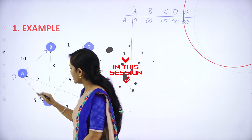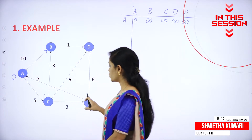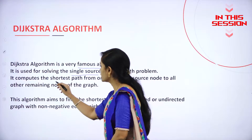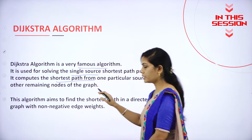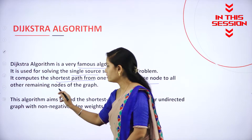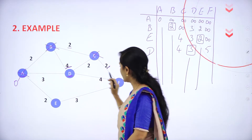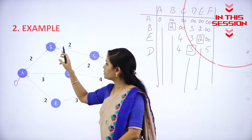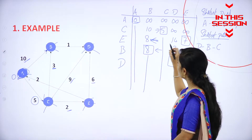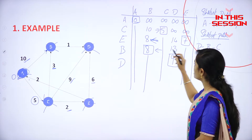B and A is connected to C, but A is not connected to E. E is connected to A. The shortest path from one particular source node to all other remaining nodes of the graph. You are not supposed to visit B and A, so D to C is 2. D to B is 8, so we have one shortest path.